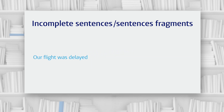The phrase 'our flight was delayed' is also an example of a clause. You can think of a clause as a building block of a sentence. A sentence can be just one clause or it could combine more than one clause. Some clauses can stand on their own as a sentence — these are called independent clauses. 'Our flight was delayed' is an example of an independent clause. Some clauses need to be attached to an independent clause to make sense — these are called dependent clauses.